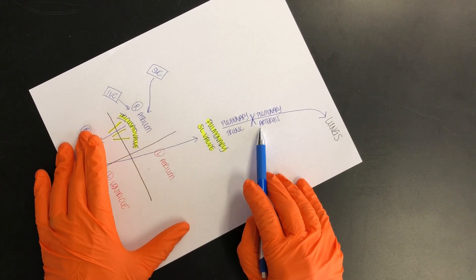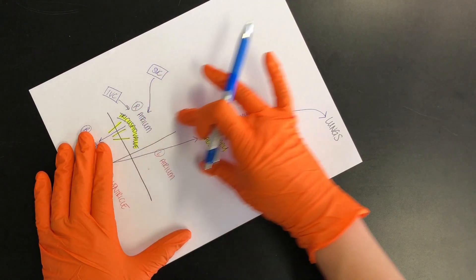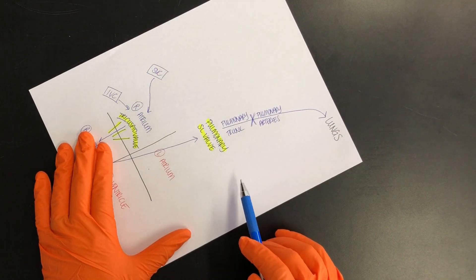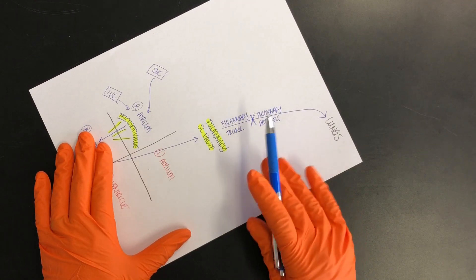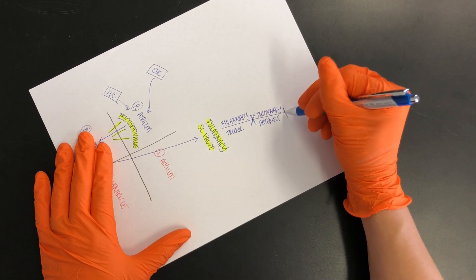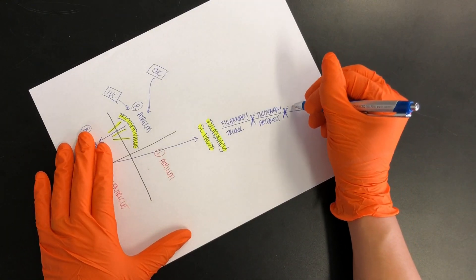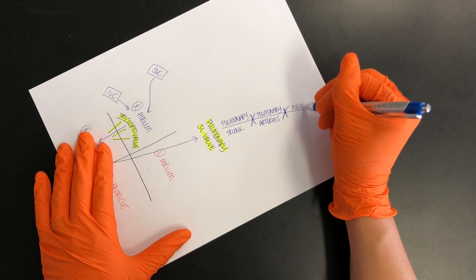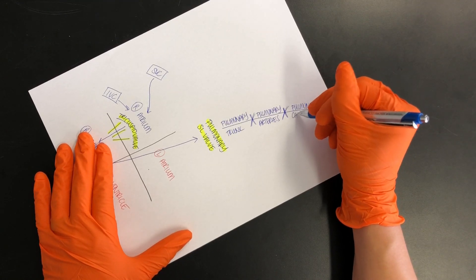Arteries, because that blood is being taken, A, for away from the heart to the lungs. Plural, because we have right and left lungs. So then we do that again, and then the smallest blood vessels we have will be the pulmonary capillaries.